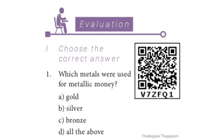Question 1: Which metals were used for metallic money? Options: Gold, Silver, Bronze, All the above. The correct answer is D option: All the above.